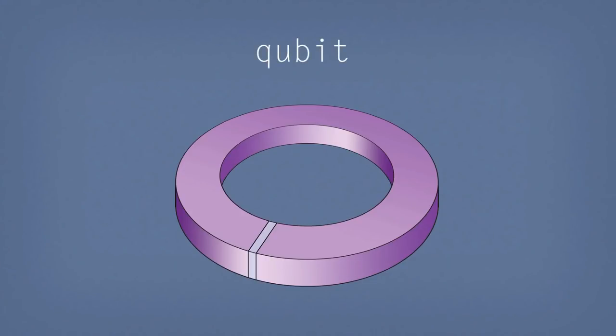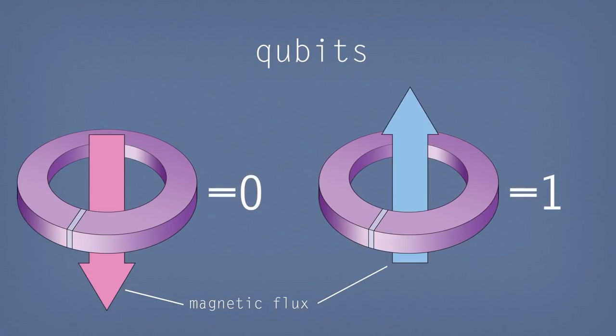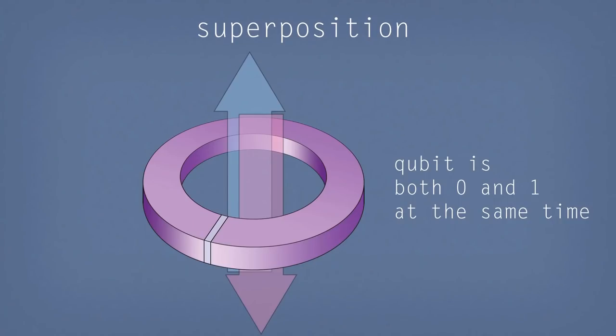So the basic computational element in a quantum processor is a qubit. Now a qubit is a lot like a bit, in the sense that it can encode a state as 0 or a 1. But it's a quantum bit, Q for quantum bit. And it has the additional properties that can be in a superposition of 0 and 1 at the same time.